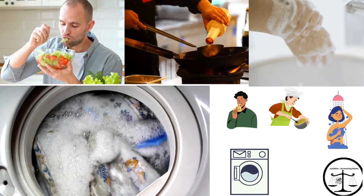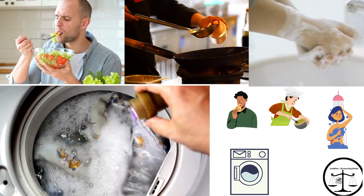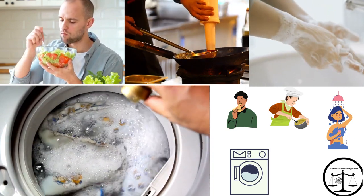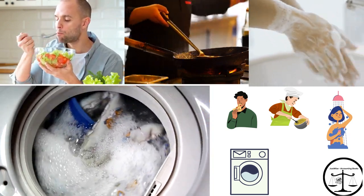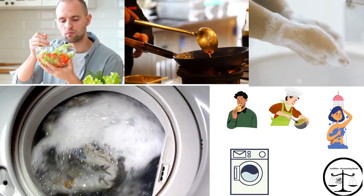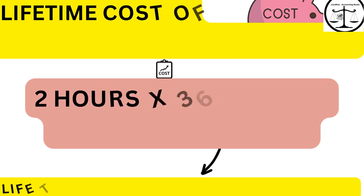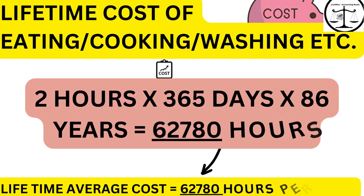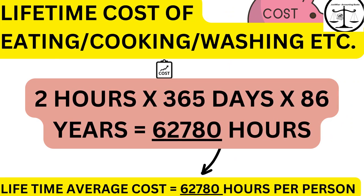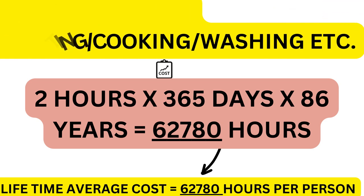As we know, it is important to eat, cook, wash, and similar activities. Assuming these activities cost on average about 2 hours per day — that is 2 hours per day multiplied by 365 days per year multiplied by 86 years — this will be 62,780 hours, costing an average person about 62,780 hours.